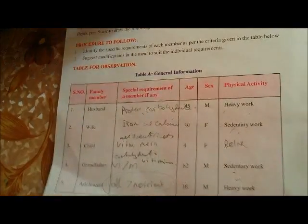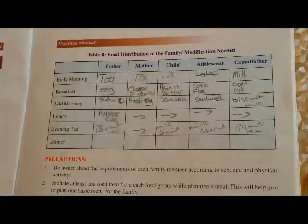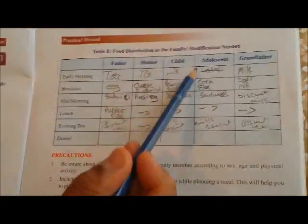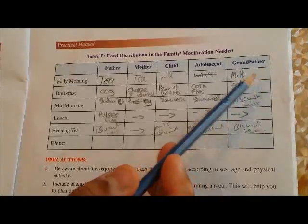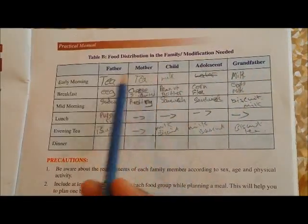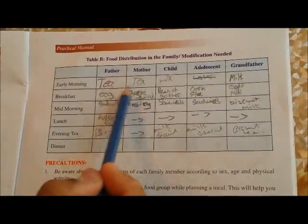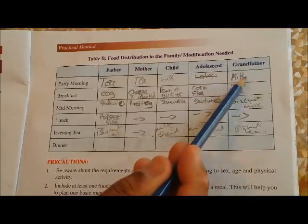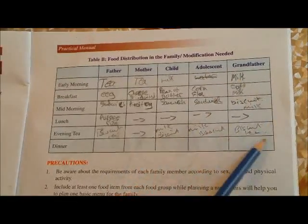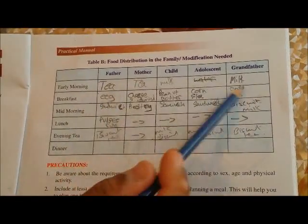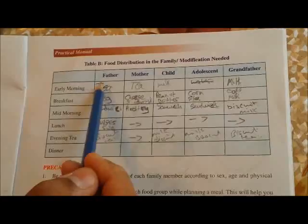Now let us come to part B of the table. In part B of the table, we have the father, mother, child, adolescent, and grandfather — the different times of the day when they can have their food. You can mention it as per what your family members are doing at this time.